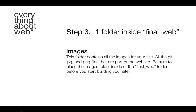Step three is to create a folder inside of final_web called images. This is the folder that contains all the images for your site — so all the GIF, JPEG, and PNG files that are part of the website. You want to be sure that you place these images inside of that images folder, and that images folder needs to be placed inside of the final_web folder.